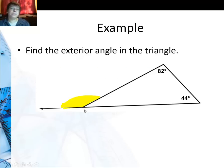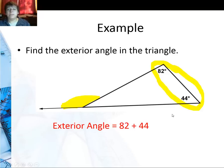Let's say I'm looking for this exterior angle. Well, it's just going to be these two angles added together. So it'll be 82 plus 44 which is 126.